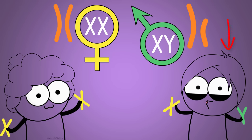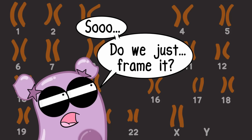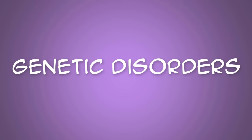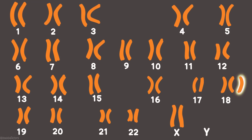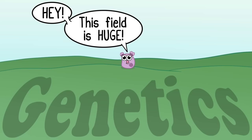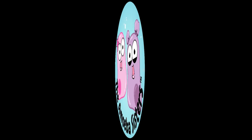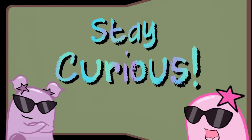So why do we care about karyotypes or learning about chromosomes? One reason is it can really help when we are trying to understand genetic disorders. A karyotype can reveal missing chromosomes or extra chromosomes at specific locations. Do you have an interest in a career that involves this area of study? The field of genetics continues to expand and the career of a genetic counselor may be something to read up on. That's it for the Amoeba Sisters, and we remind you to stay curious.